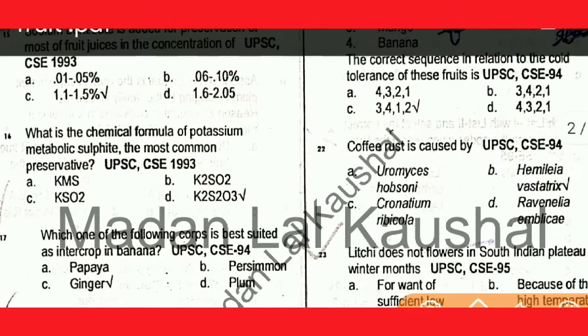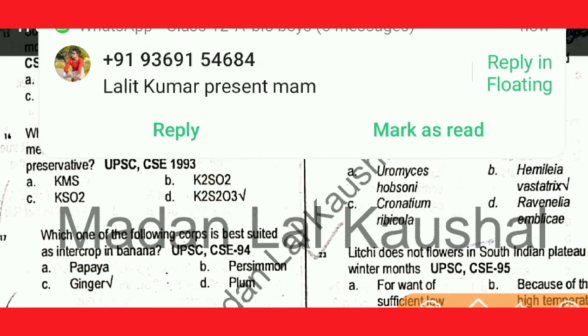Next question: what is the chemical formula of potassium metabisulfite? The answer is K2S2O5.